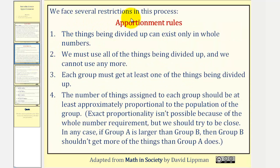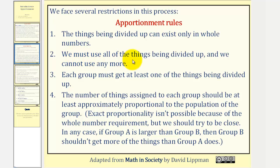We face several restrictions in this process, which leads us to the apportionment rules. Number one, the things being divided up can exist only in whole numbers, meaning we can't have fraction or decimal parts of the things we are dividing up. Number two, we must use all the things being divided up and we cannot use any more. Three, each group must get at least one of the things being divided up.